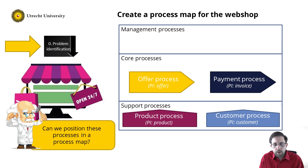Adding the process instance also helps with the information model — each process instance should be included in the information model. So adding the process instance gives an additional validation for both the process identification and for the information model. Two birds with one stone.